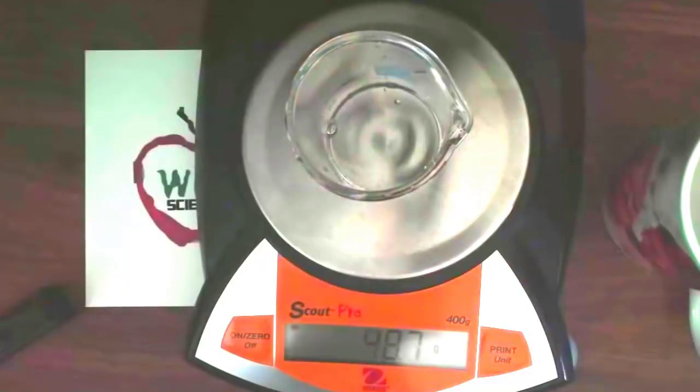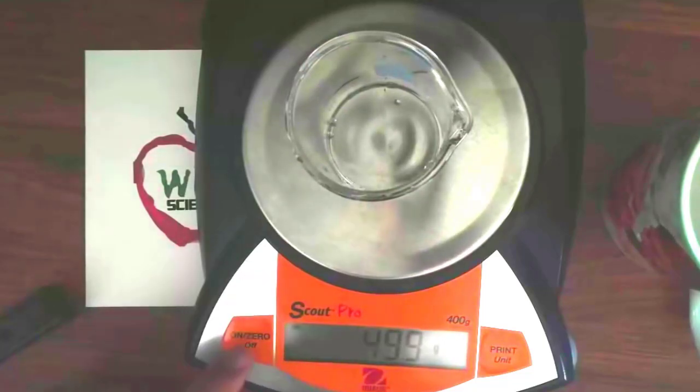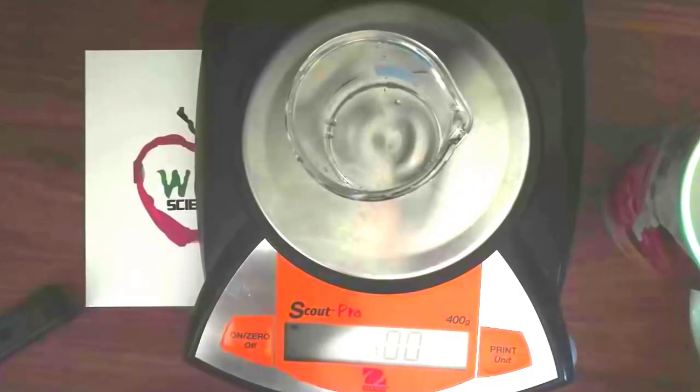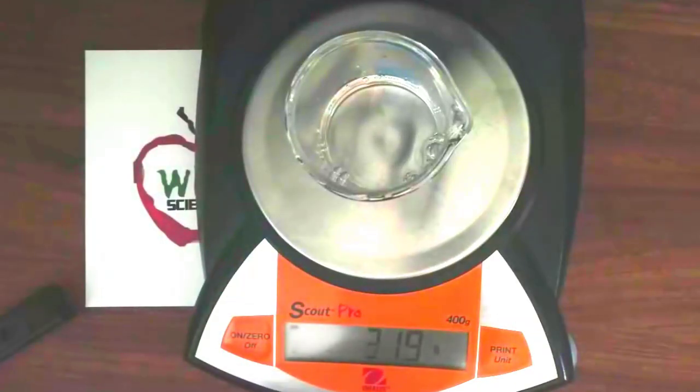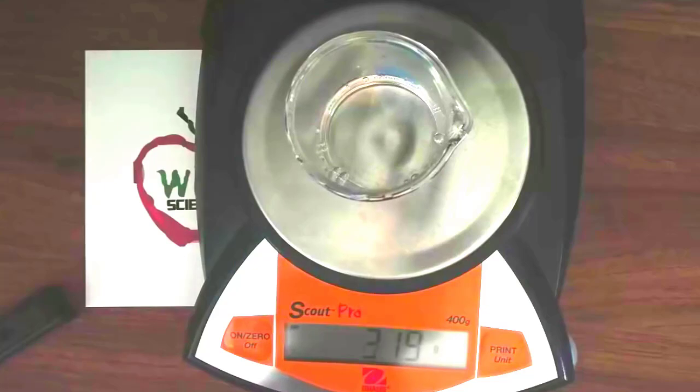And we can use the scale to measure the mass of water. But first I have to pour the water out first. And I measure the beaker. And the beautiful part about this scale, it has a zero button. So I can remove the mass of the beaker. Now I pour the water in. All the water in.